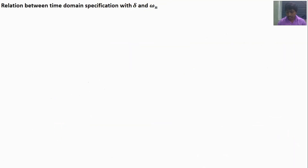The relation between time domain specifications with ζ and ωn — from an exam point of view, you should remember the expressions for peak time, rise time, settling time, and peak overshoot. If you derive the peak time and rise time expressions during the exam, it takes a long time. So just remember the expressions. Now I will explain the derivation procedures.